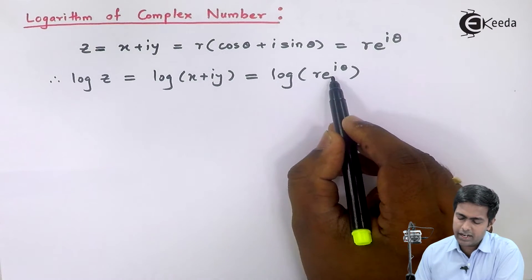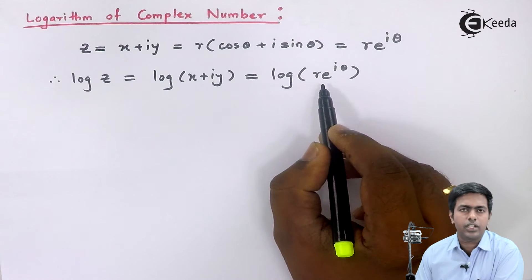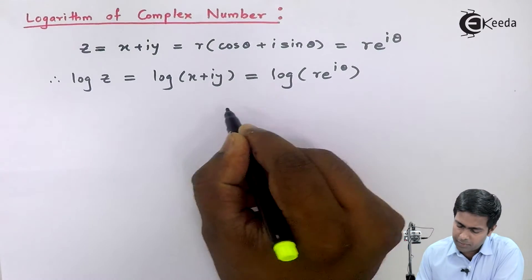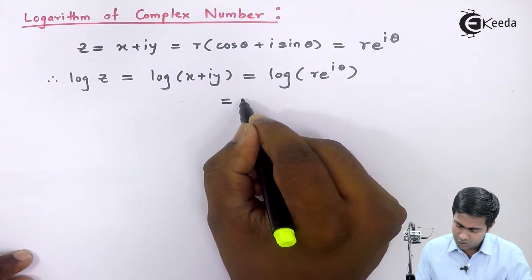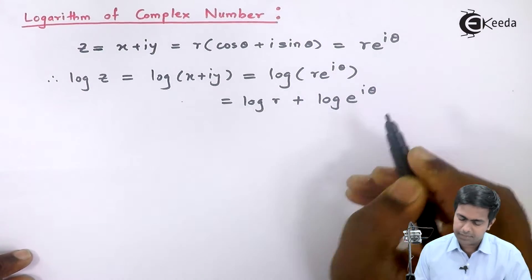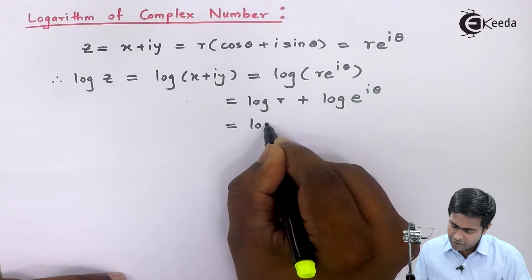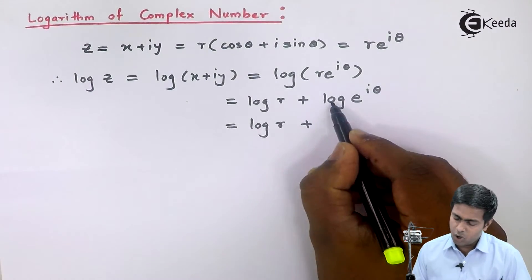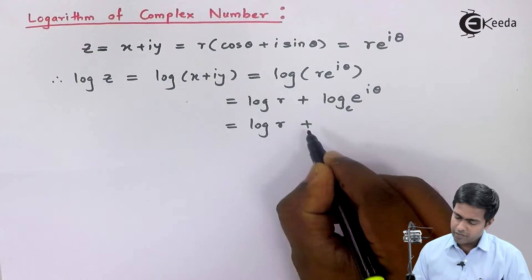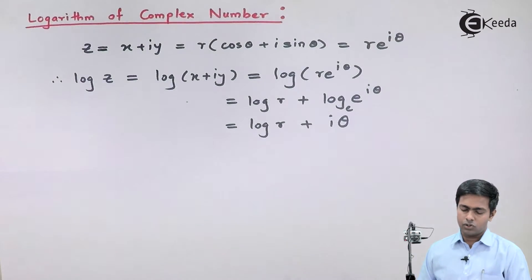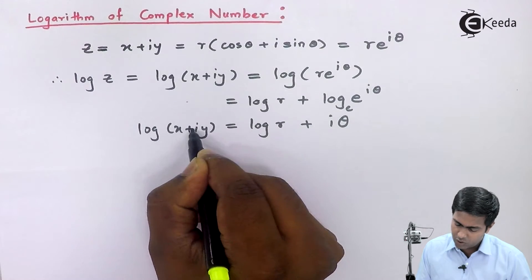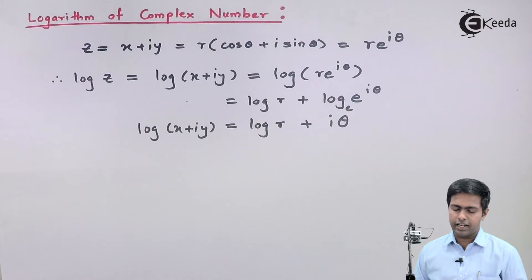Here r and e are multiplying each other, so I will use the logarithm formula: log of a into b equals log a plus log b. This becomes log of r plus log of e raised to i theta. Now log of r remains as it is, whereas the log and e cancel since the base of this log is e, and we get i theta. So the formula for log of x plus iy equals log of r plus i theta.